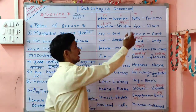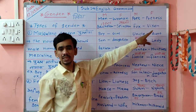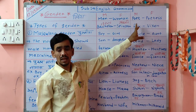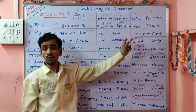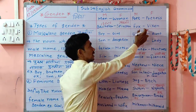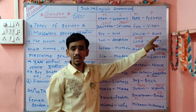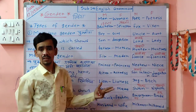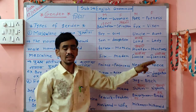Then poet — Kavi — becomes poetess — Kavayatri. Hawks — opposite is vixen. This is something special — it is an exception. Such types of gender questions are asked in competitive exams and board exams also. Uncle — Kaka or Mama — opposite is aunt — Kaku or Mami. Lord — Malak — opposite gender is Lady. Hunter means Shikari, and huntress is the opposite.